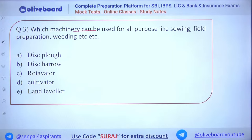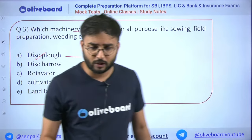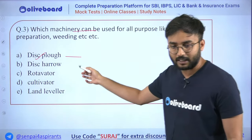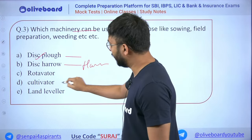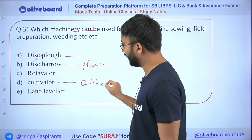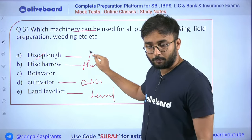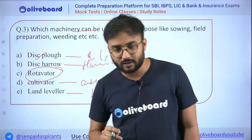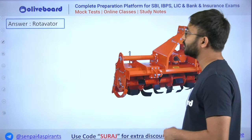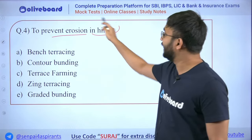Next question: Which machinery can be used for all purposes like sowing, field preparation, and weeding? Disk plow is used only for tillage and harrowing. Disk harrow is for harrowing, cultivator for cultivation. The answer is rotavator.